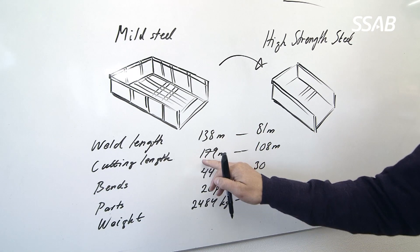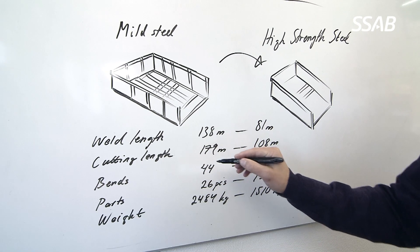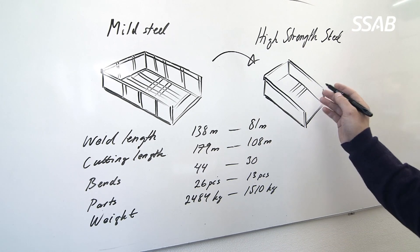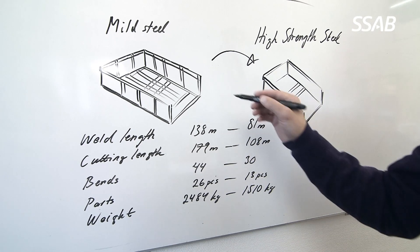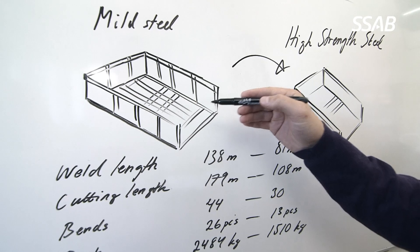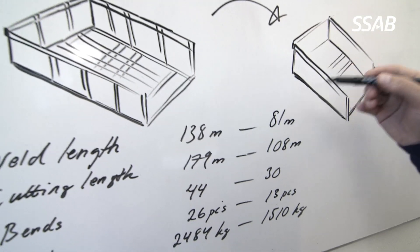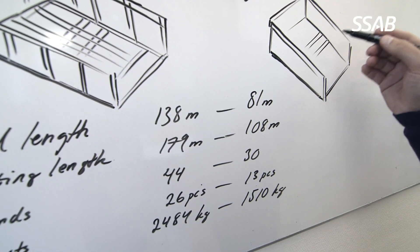In the old one we have 179 meters of cutting and 108 meters in the new version. We will do 44 bends in the old version and we will do 30 bends in the new one.